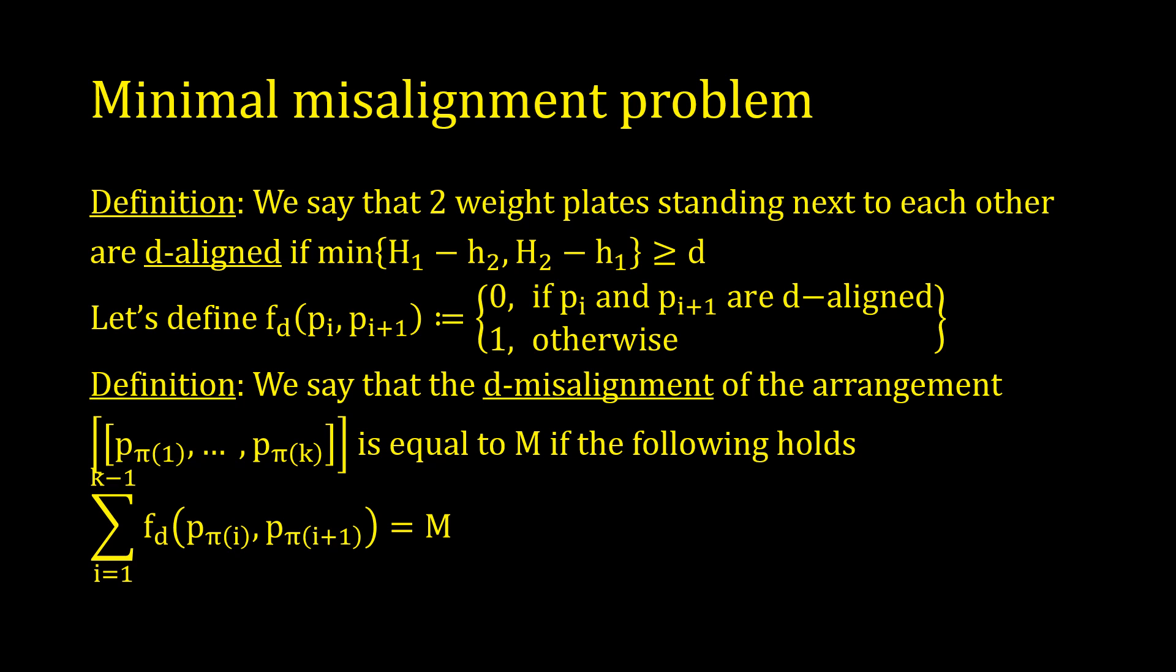The less aligned the plate's holes are, the more time it takes. We define the D-alignment of two plates based on this. D is a positive number, mostly the thickness of the pointing finger. Next, the D-misalignment of an arrangement is the number of not-aligned pairs of consecutive plates.